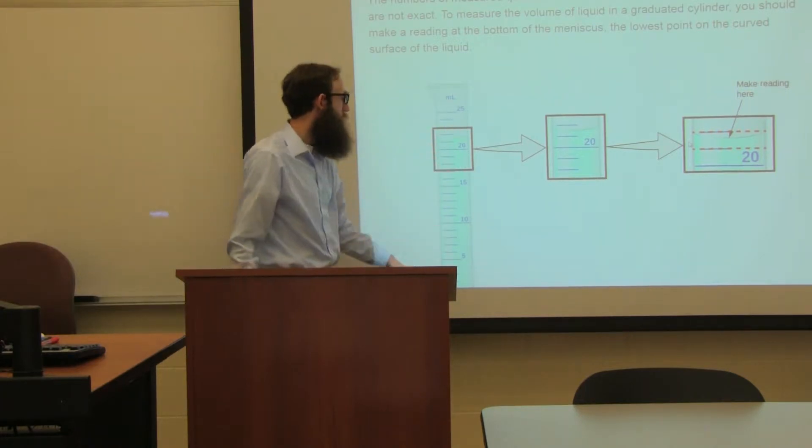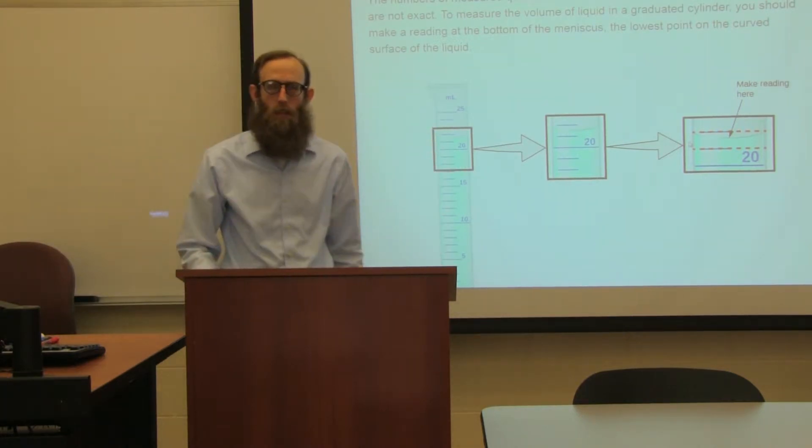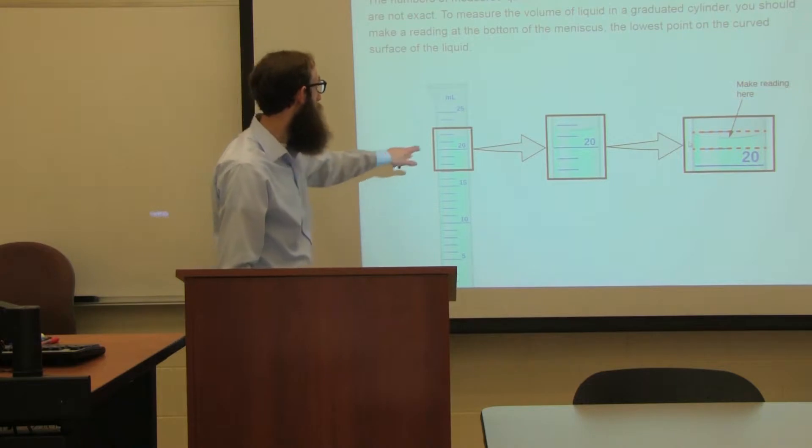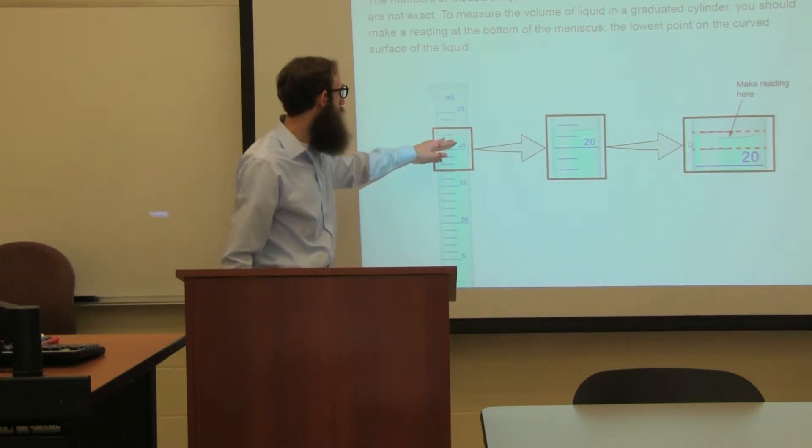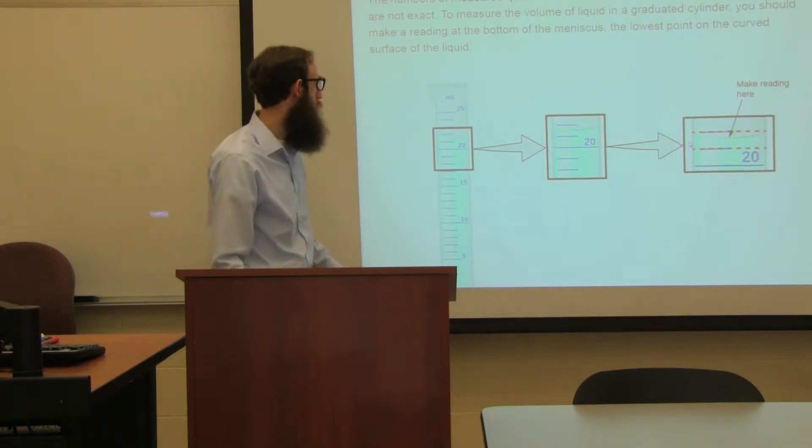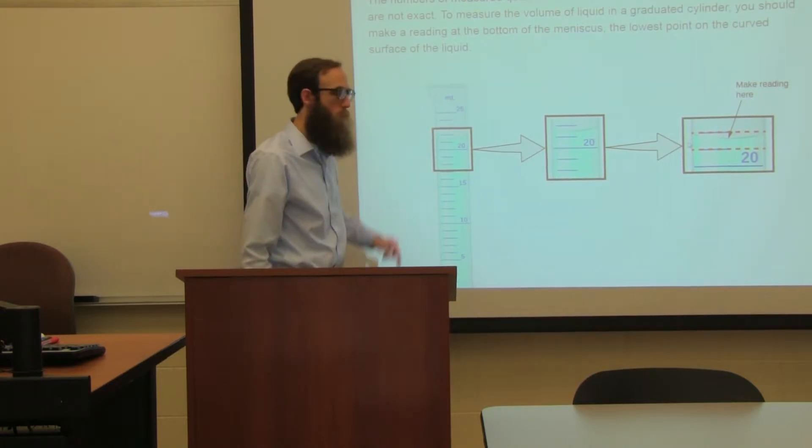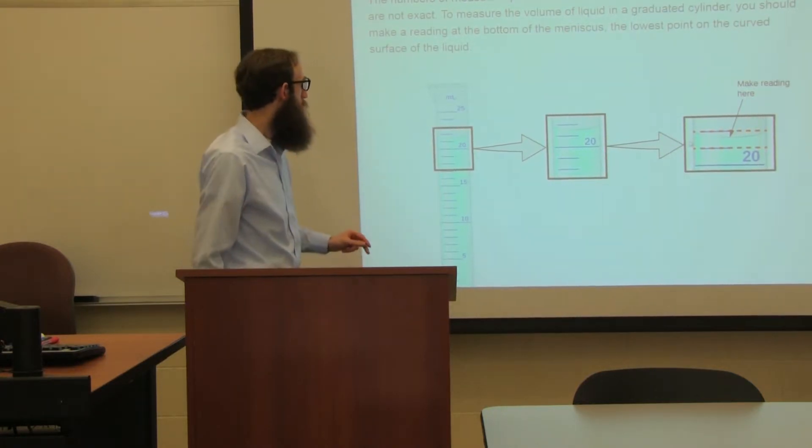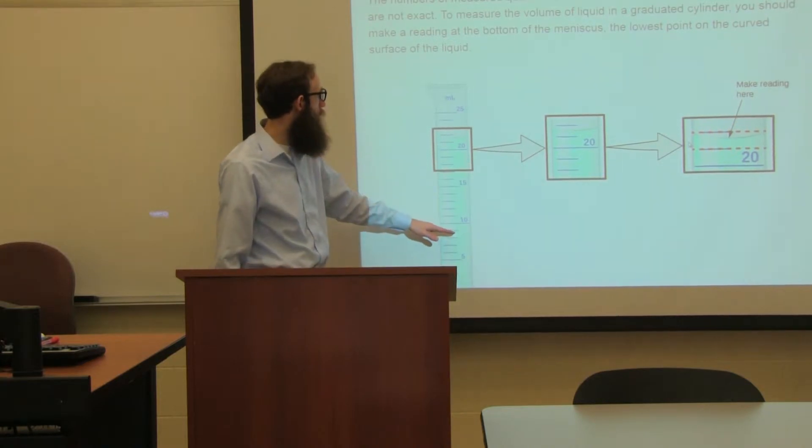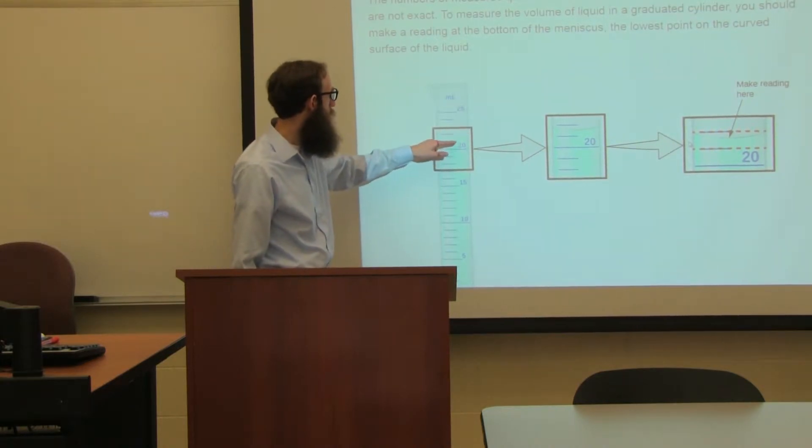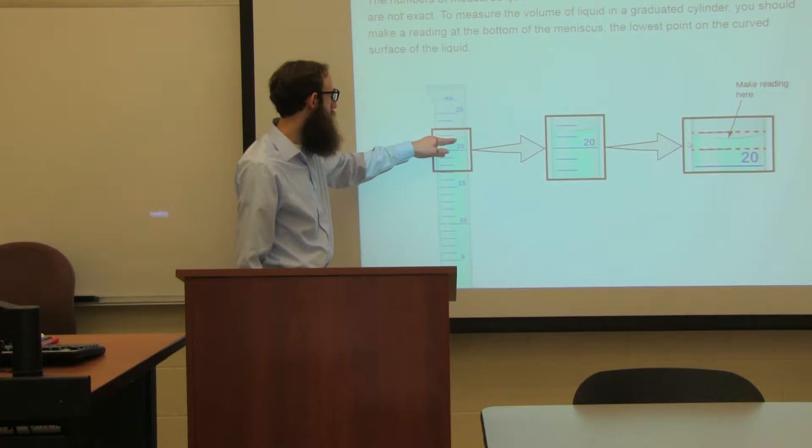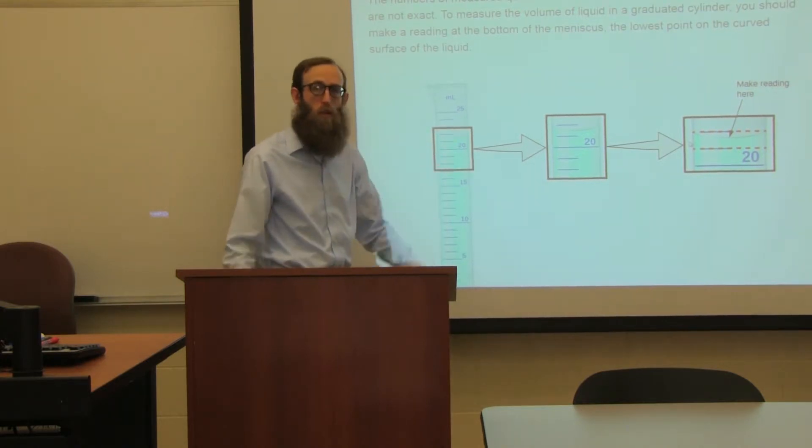A little bit more of a visual example: we've got water in a graduated cylinder. Now in one of your labs, you'll be asked to make readings. The readings we have to make at this curved surface. We talked about that a little bit in one of the videos. This curved surface is known as a meniscus, and we take the reading at the bottom of the meniscus. The graduated cylinder is calibrated such that wherever the bottom of the meniscus lies, that's the volume that the cylinder contains.